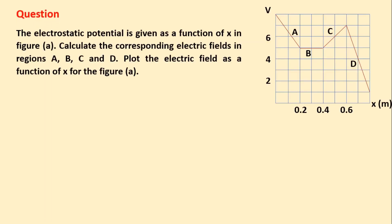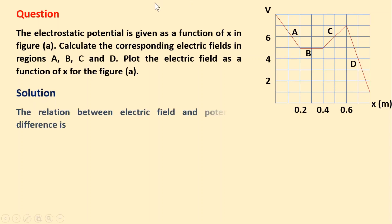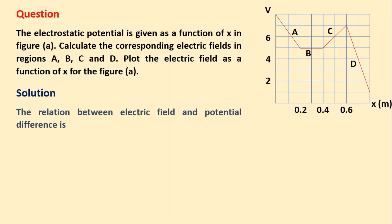Question: A voltage versus distance graph is given. The electrostatic potential is given as a function of x in figure A. Calculate the corresponding electric field in the regions A, B, C, and D. Plot the electric field as a function of x for figure A.